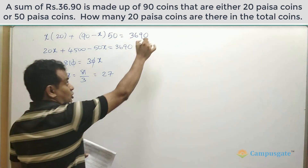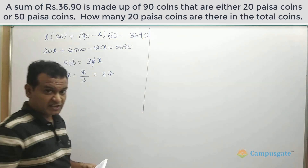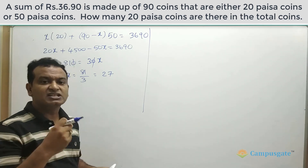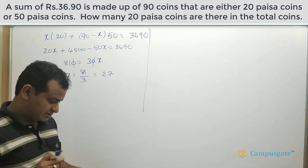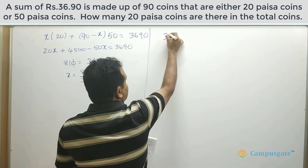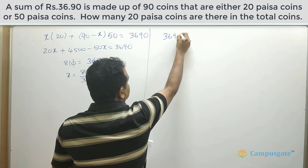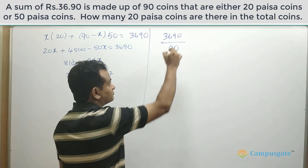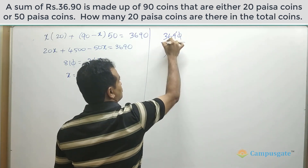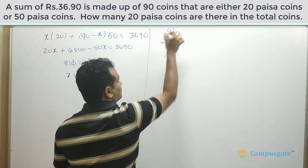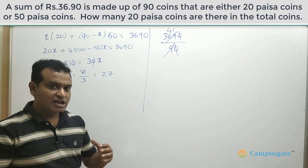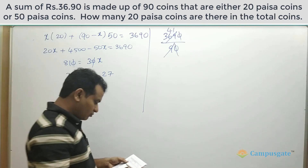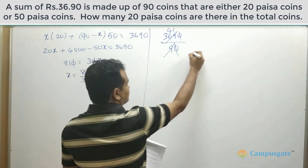We can also solve this question by using the allegation method. First, find the average value of each coin: 3690 paisa divided by 90 coins equals 41 paisa. So the average value of each coin is 41 paisa.